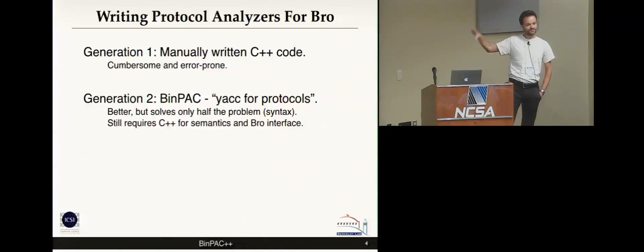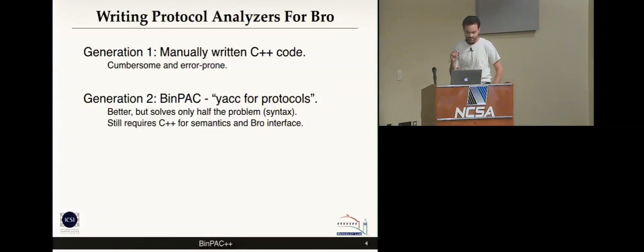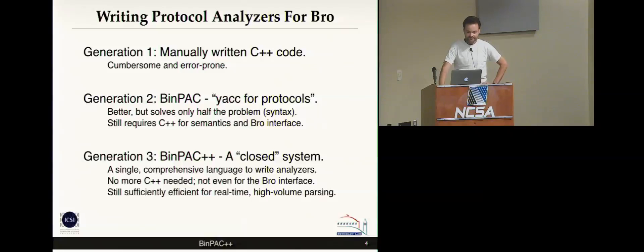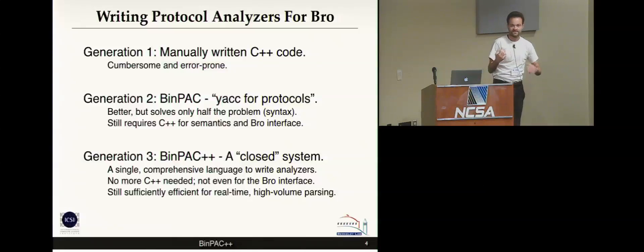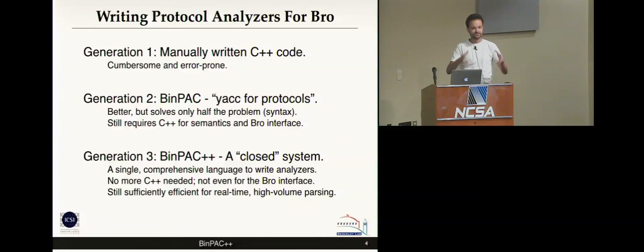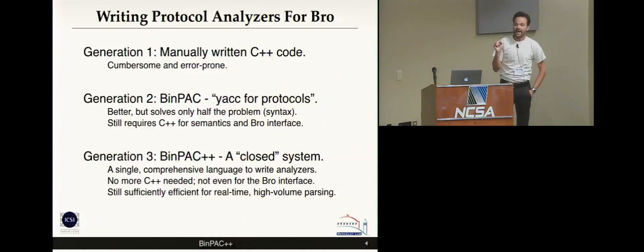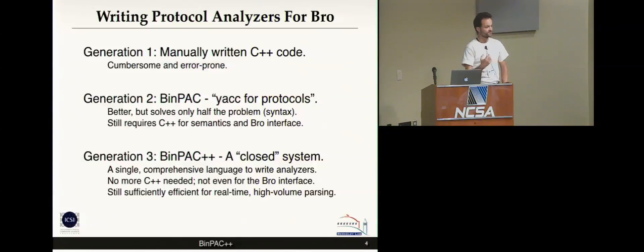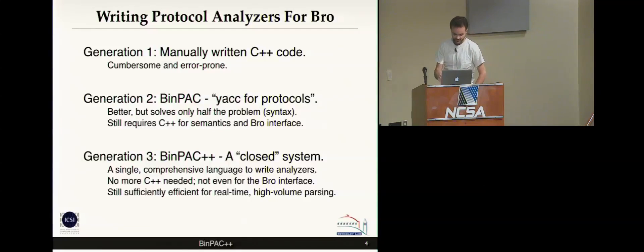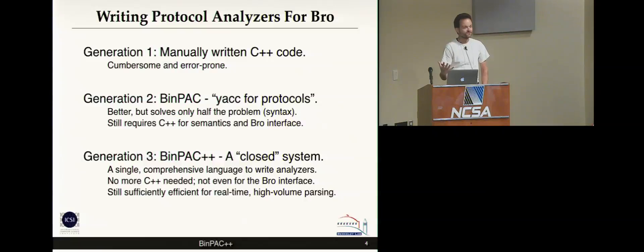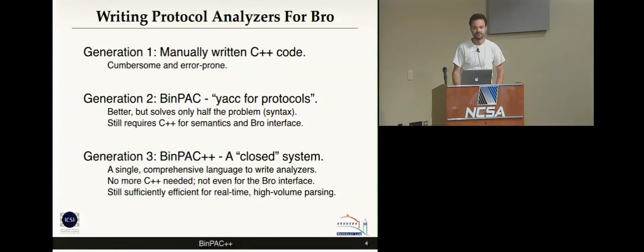What's coming next is BinPac++, as we've nicknamed it — still looking for a better name. It's a completely rewritten BinPac with a completely different implementation, taking the same approach of giving it a grammar to produce a parser. The key difference is it's a completely closed system where you don't need any C++ anymore. You have a single language expressing both the syntax of your protocol and the semantics. The interface to Bro doesn't require additional coding — there's a small interface file that tells Bro how to generate events. The trick is making it easily usable while still being efficient for real-time high-volume parsing on 10-gig or 100-gig links.